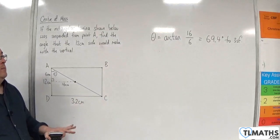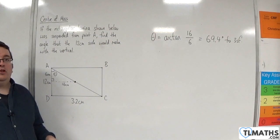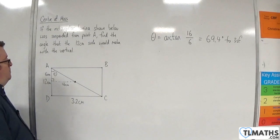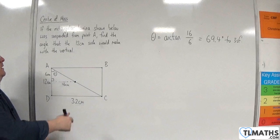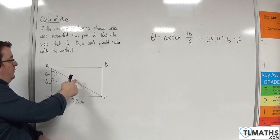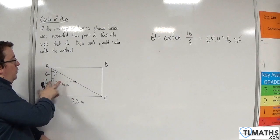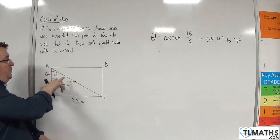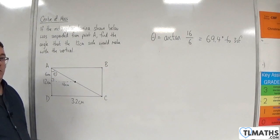When you're doing a problem like this, you don't need to redraw the shape and imagine what it's going to look like. It's much easier just to keep with the image that you have, think about drawing a line from your point of suspension to the centre of mass, and then, using the base and height of a right-angled triangle, work out the angle theta.